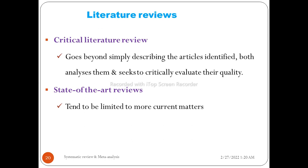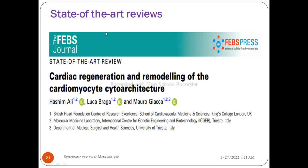There are several types of literature reviews. First, the critical literature review goes beyond simply describing articles - it analyzes them and critically evaluates their quality. Second, the state-of-the-art review tends to be limited to more current matters, reviewing recent articles and collecting the latest information available.